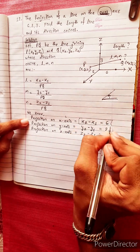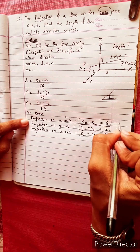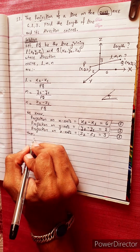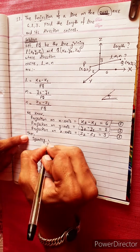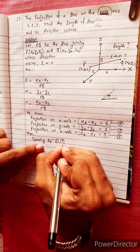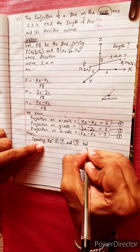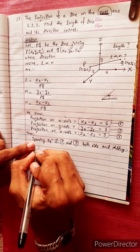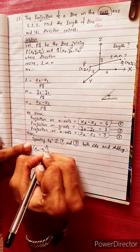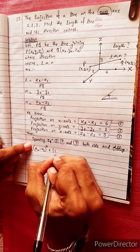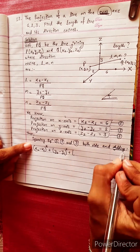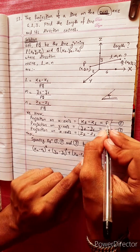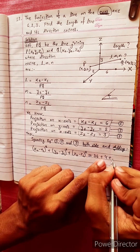Now, taking equations 1, 2, and 3, we square both sides and add them. Squaring and adding equation 1, equation 2, and equation 3: (x2 minus x1) squared plus (y2 minus y1) squared plus (z2 minus z1) squared.